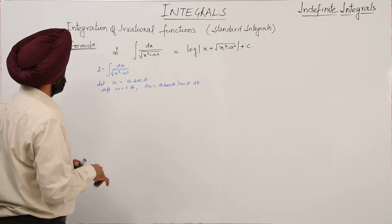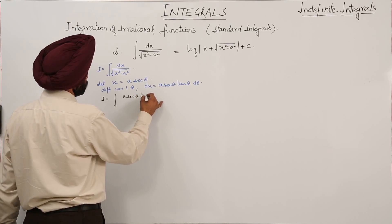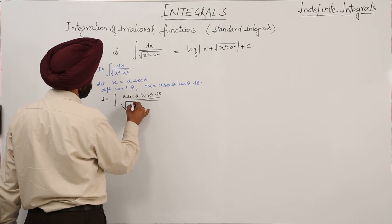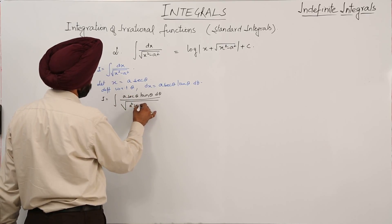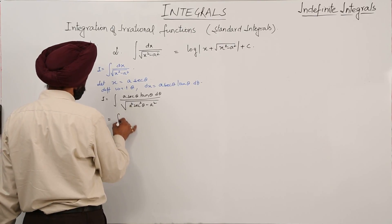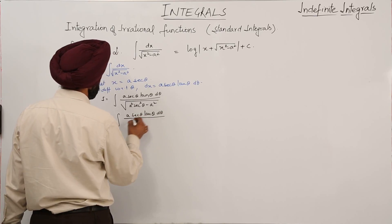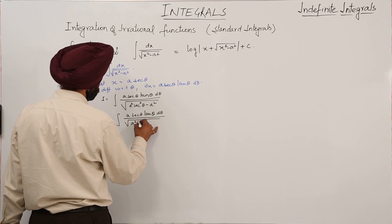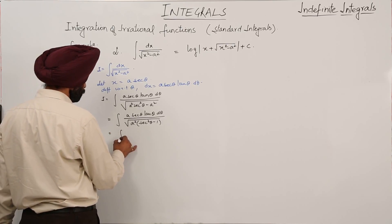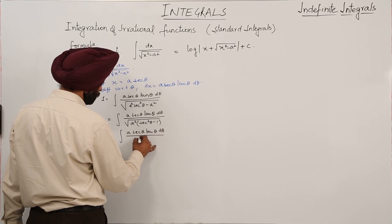Now putting the values into the integral, we have integration of a sec θ tan θ dθ upon square root of a squared sec squared θ minus a squared. So this becomes integration of a sec θ tan θ dθ upon a times square root of sec squared θ minus 1.